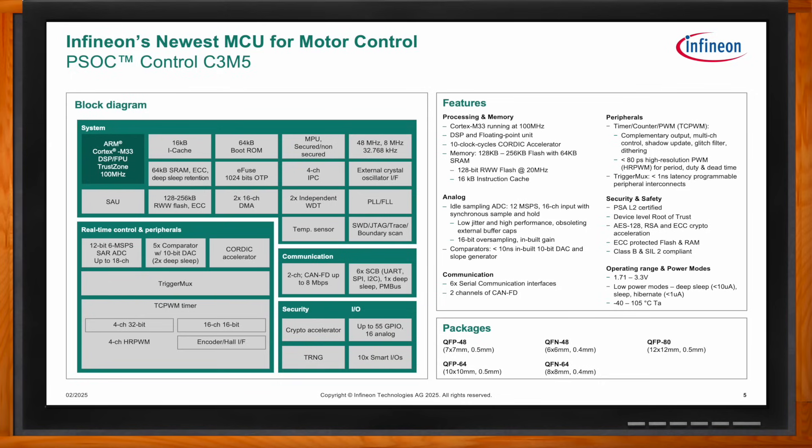A flexible TCPWM module provides 16 channels of 16-bit timers and an additional four channels of 32-bit timers. The 32-bit timers also support high-resolution control of less than 80 picoseconds, making it possible to design in wideband gap power electronics for some of the most efficient switching solutions in the market. A motion interface is provided that can operate as a quadrature decoder unit, hall sensor control unit, or multi-channel mode unit.